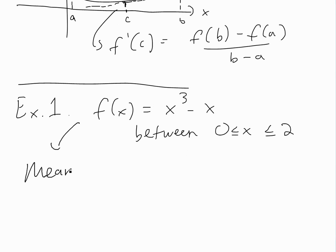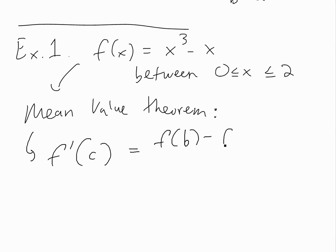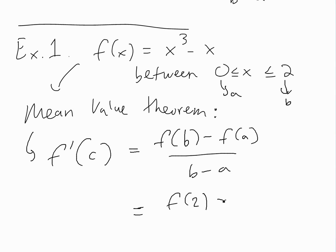If we apply the mean value theorem, it says there's going to be a number c between zero and two such that the derivative equals the average slope, which is f(b) minus f(a) over b minus a. Here a is zero and b is two, so we plug in: f(2) minus f(0), over two minus zero.